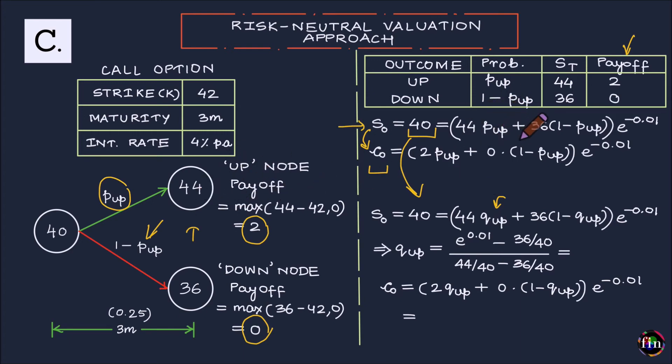So let's ditch this P up and let's work out a Q up and equivalently a 1 minus Q up so that this equation is indeed satisfied. Please note, I am moving from a real world probability to a hypothetical risk neutral probability so that this equation is satisfied.